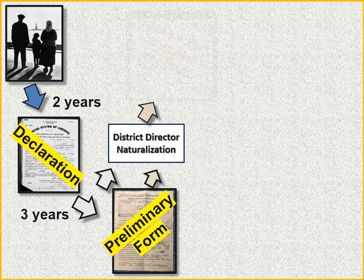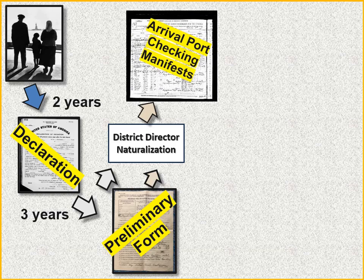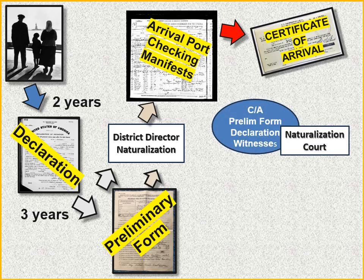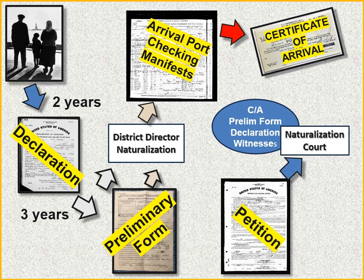The Director would send it to the arrival port to check the manifest — but only if your ship came after June 29th, 1906. Immigration clerks at that port would verify your name on the manifest, then issue a Certificate of Arrival. That Certificate of Arrival went to the Naturalization Court, along with the preliminary form and your Declaration, and only then could you finalize your petition.